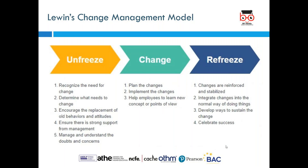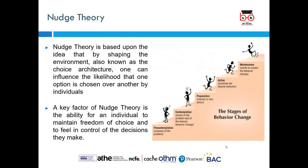There are also several models. The Lewin change management model has three phases: unfreeze, change, and refreeze. Then there's the Nudge theory, which is based on the idea that by shaping the environment — also known as choice architecture — you can influence the likelihood that one option is chosen over another. It divides the organization into smaller branches to see how changes in one department affect another. The key factor of Nudge theory is the individual's ability to maintain freedom of choice and feel in control of the decisions they make.